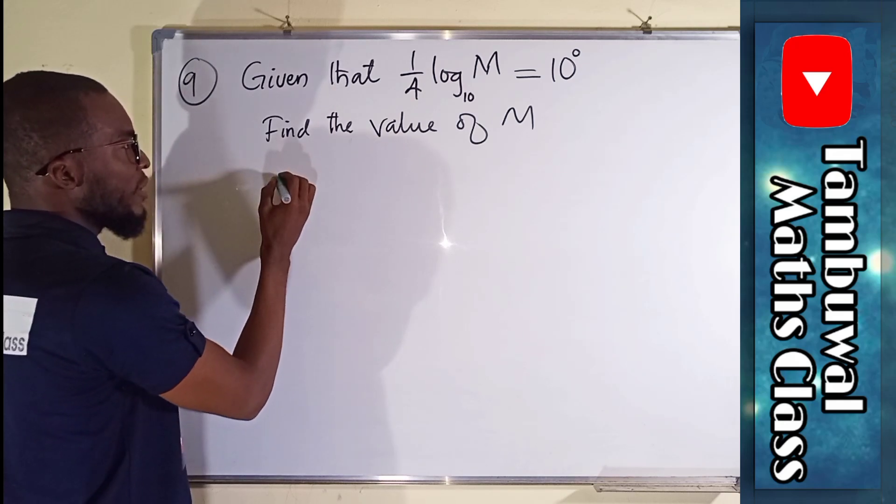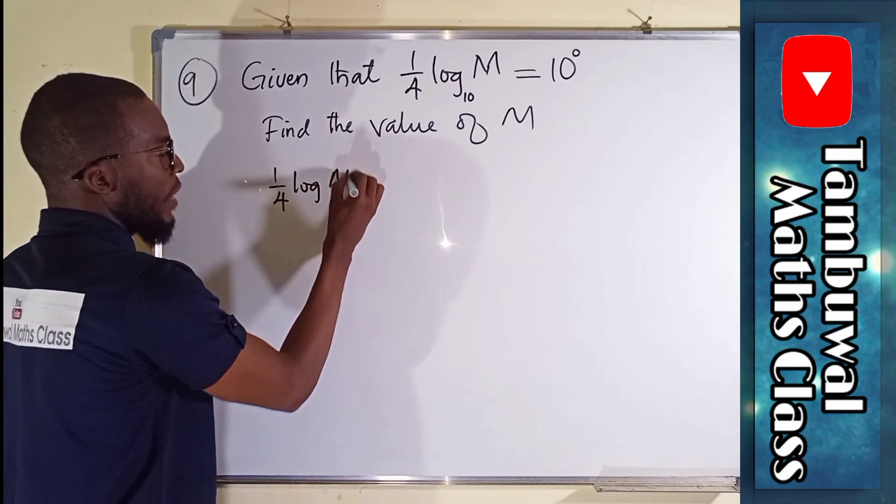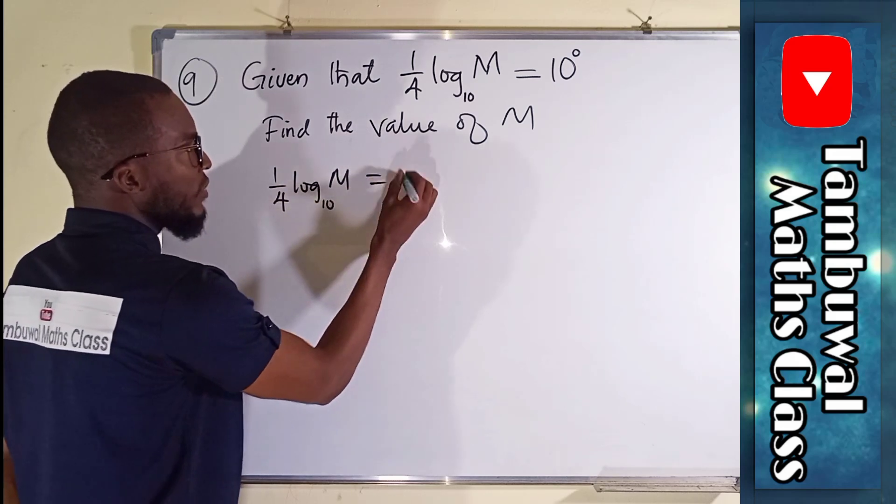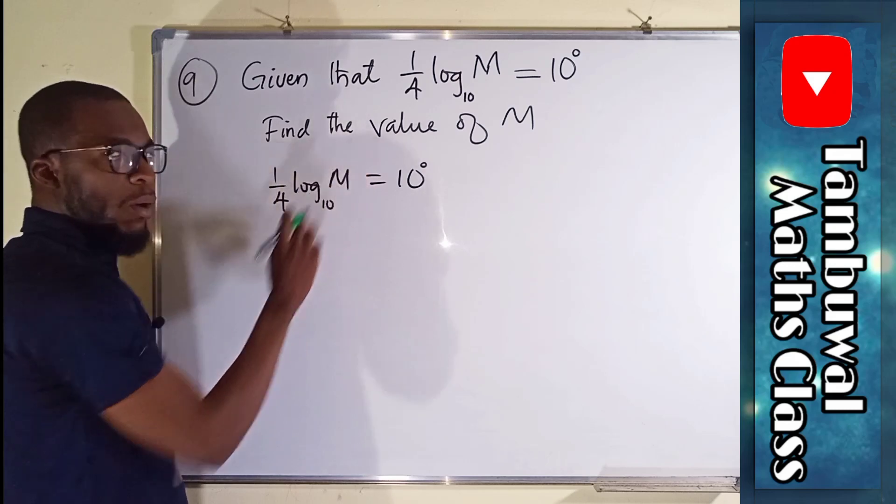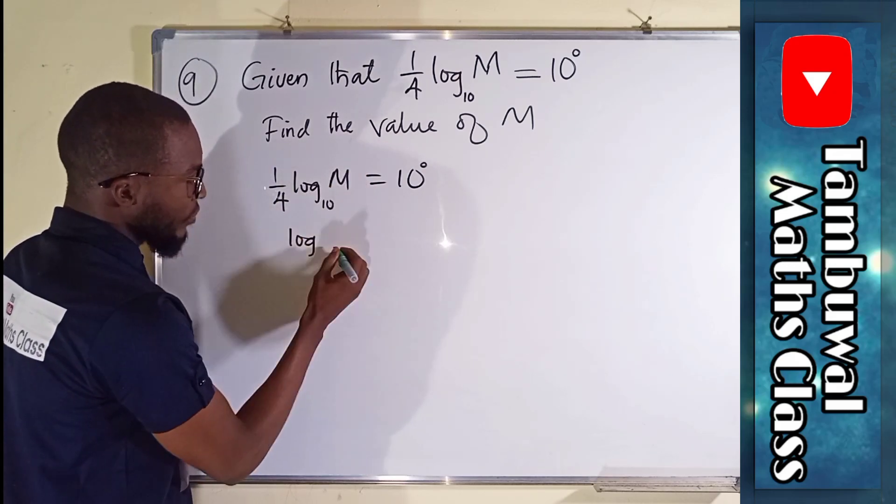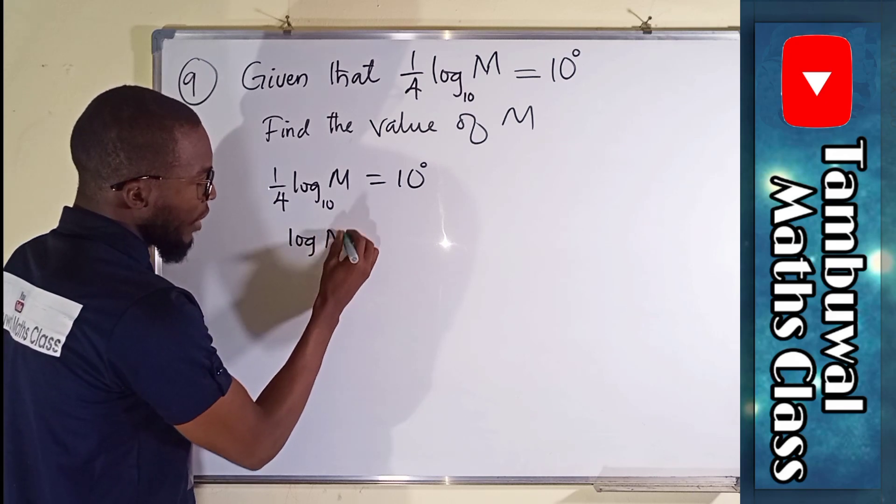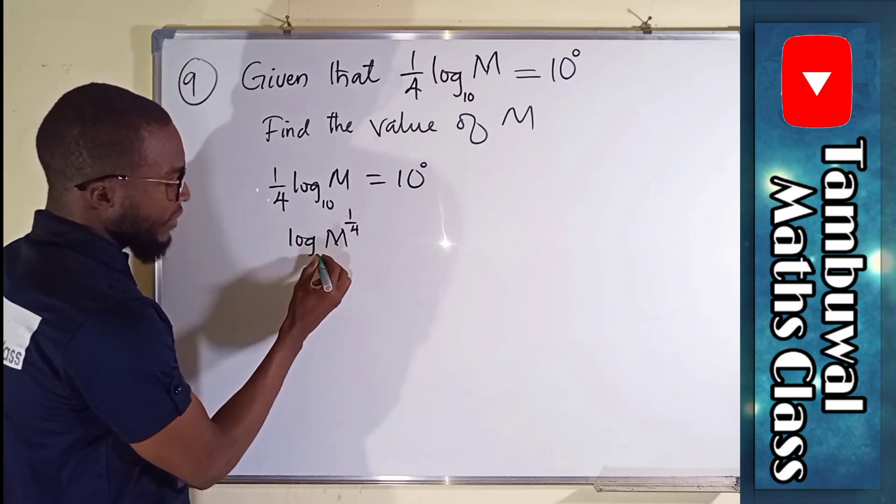So this can also be written. Let me repeat the question. 1 over 4 log M base 10 equals 10 power 0. This 1 over 4 can serve as a power of M. So this is equal to log of M power 1 over 4 base 10.